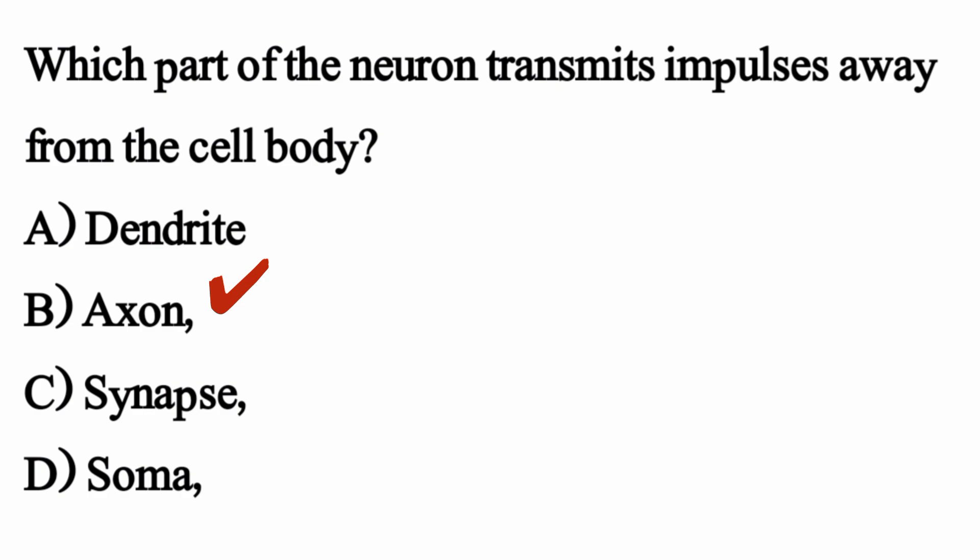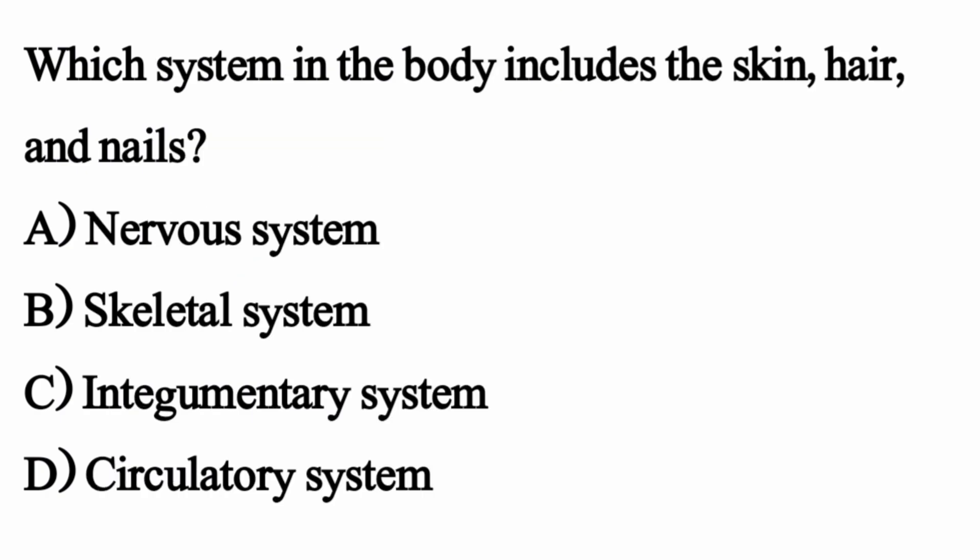Which system in the body includes the skin, hair and nails? The right option is option C: the integumentary system.